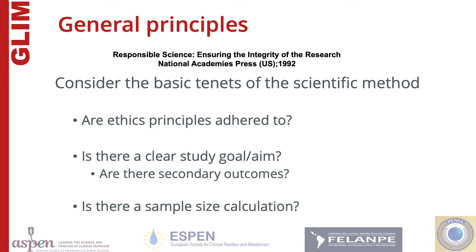While GLIM is being implemented worldwide, studies describing its use and evaluating its validity and reliability are also being published. When reviewing these studies on GLIM, the basic tenets of science should be considered: Are ethics principles adhered to? Is there a clear study goal? And has a sample size calculation been made? This is specifically important as most studies to date on GLIM, as of early 2021, are secondary studies based on data previously collected for other purposes. These retrospective studies typically determine predictive validity of GLIM only, and may not be sufficient in many respects. A sample size calculation is the first step to determining if the study has sufficient power to reach its aim.